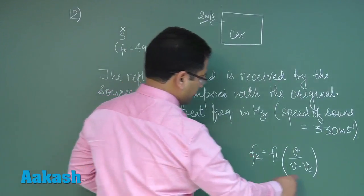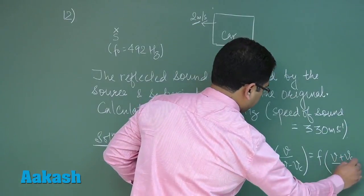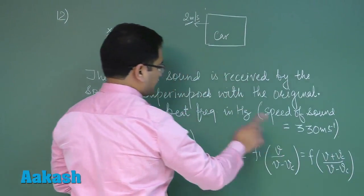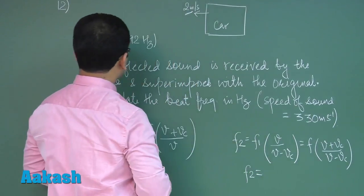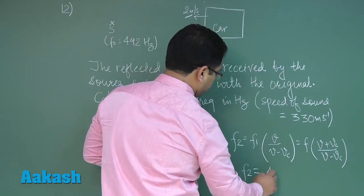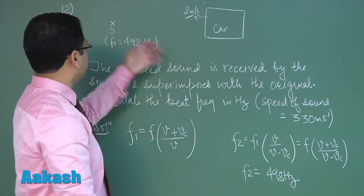calculation and that F2 would come out to be 498 hertz, the frequency received by the source after reflection. Now the concept of beat frequency is quite simple - the difference in two frequencies.